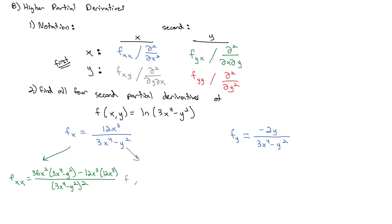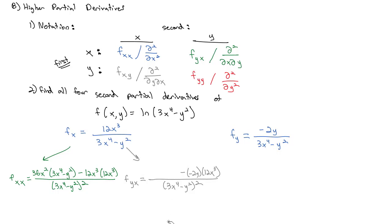This time we're going to find fₓ_y — the partial derivative of fₓ with respect to y. Using the quotient rule: the derivative of the numerator (12x³) with respect to y is zero, times the denominator (3x⁴ − y²), minus the derivative of the denominator with respect to y, which is negative 2y, times the numerator (12x³), all over the denominator (3x⁴ − y²) squared. Since zero times anything is zero, that first term drops out, and the double negative makes it positive, giving us 24x³y over (3x⁴ − y²)².